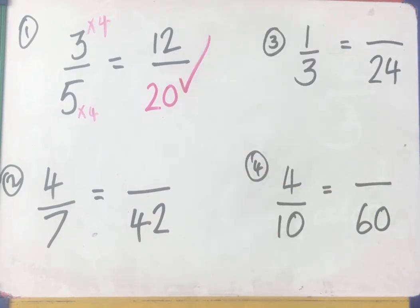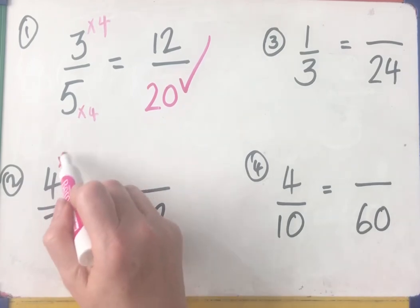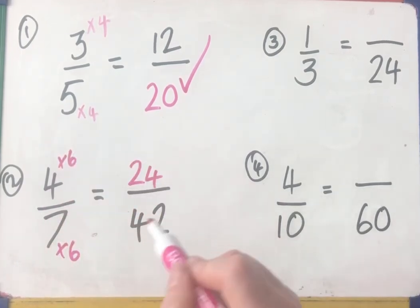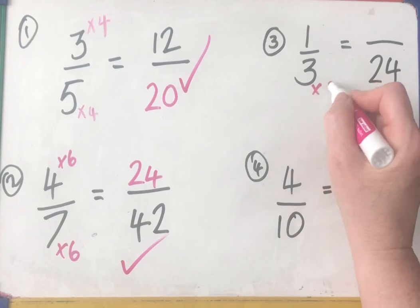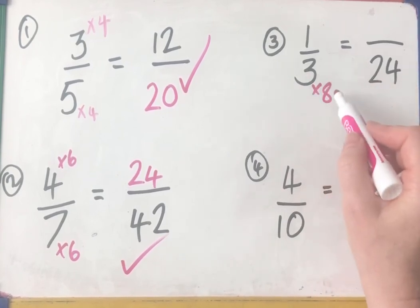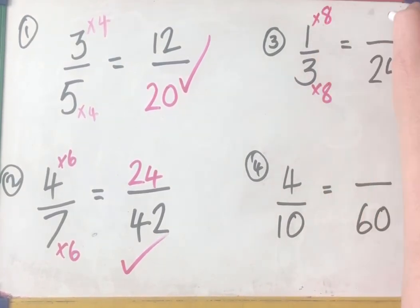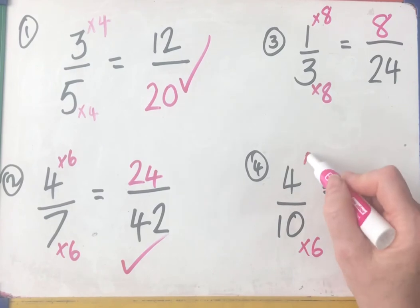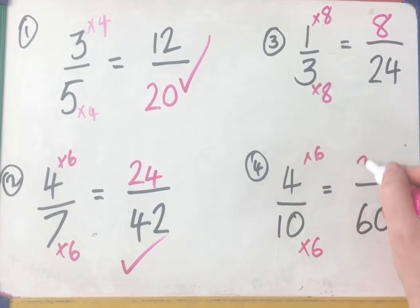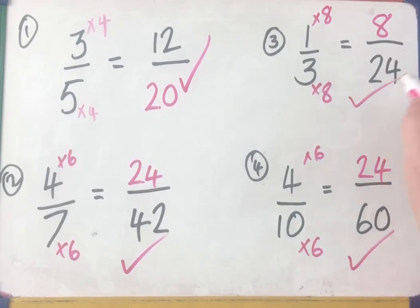And let's have a look at the second one. 7s into 42 go 6, and 4 times 6 is 24. So 24/42. And I like that, especially if you got it right. 3s into 24 go 8. If I multiply the bottom by 8, I must do that to the top. 8/24. And the last one, well, 10s into 60 go 6. So 4 times 6 is again, 24. So hopefully you've got yourself four ticks.